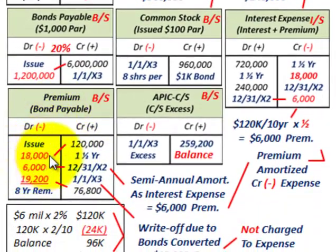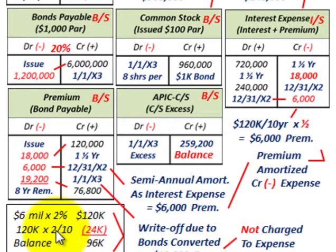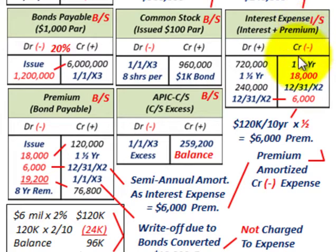Now let's look at the amortization of this premium and how we'd record interest expense. For the first year and a half, we would have amortized $18,000. That's based on a $120,000 total premium ($6 million at 2%) divided over 10 years — $12,000 per year — and for a year and a half that's $18,000. We debit the premium to reduce it by $18,000, and the credit goes to interest expense on our income statement, reducing it by $18,000.